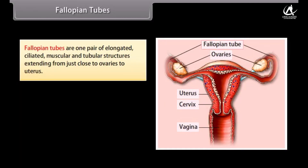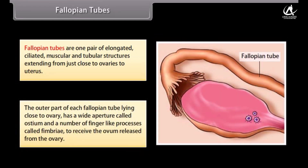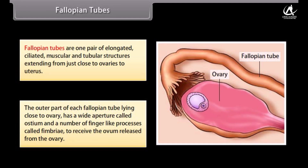Fallopian tubes are one pair of elongated, ciliated, muscular, tubular structures extending from just close to the ovaries to the uterus. The outer part of each fallopian tube lying close to the ovary has a wide aperture called the ostium and a number of finger-like processes called fimbriae to receive the ovum released from the ovary.